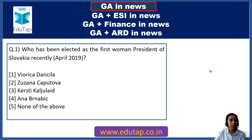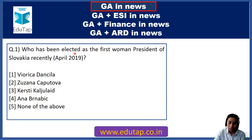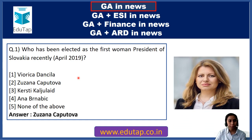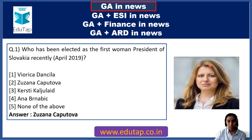Question 1: Who has been elected as the first women president of Slovakia recently? The answer is option 2, Zuzana Caputova. She has been elected as the first women president of Slovakia. You can see her picture here. This is important since Slovakia has got a women president for the very first time.